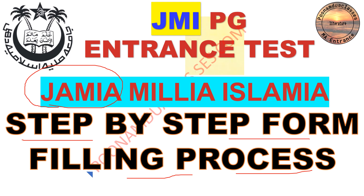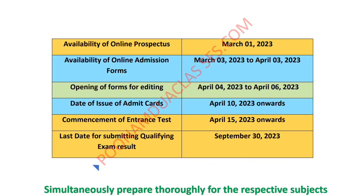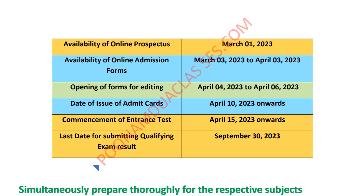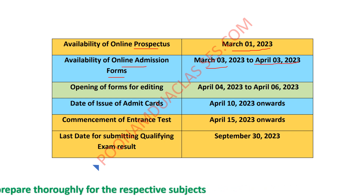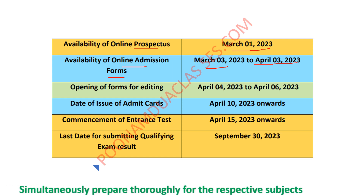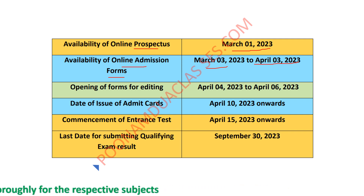We will also get to know the last date and what kind of documents you need to fill up the form. Many of my students have already filled up the form. Those who have not yet, please go for the form filling process as soon as possible because the last date will approach very soon. March 1, the online prospectus was available, and the online form did start on March 3 and the end date is April 3. There may be an extension but do not keep that in mind and do it as early as possible.